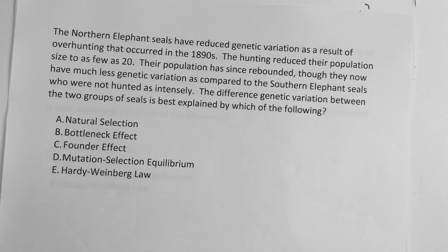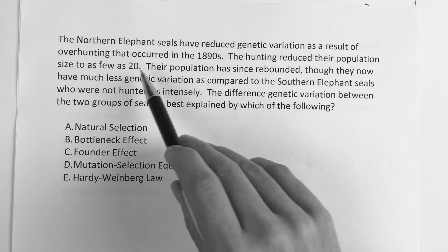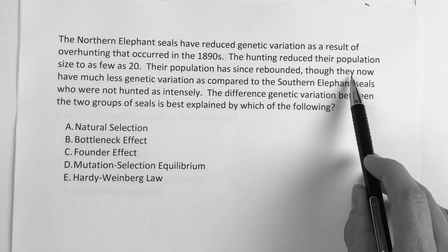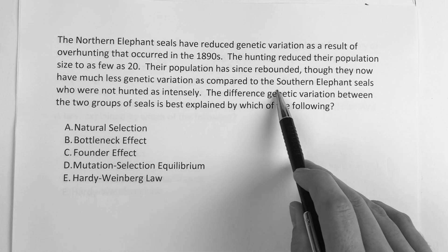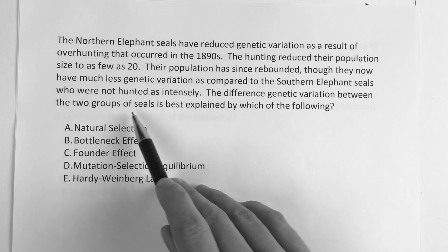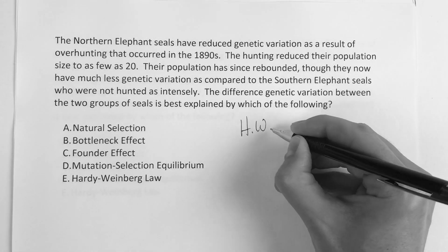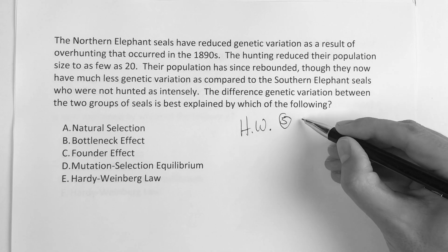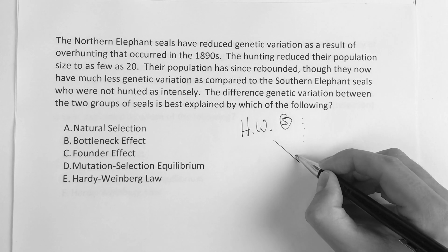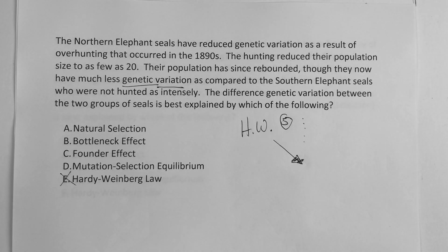The second question: northern elephant seals have reduced genetic variation as a result of over-hunting that occurred in the 1890s. The hunting reduced their population to as few as 20. Their population has since rebounded, but they now have much less genetic variation compared to the southern elephant seals, who were not hunted as intensely. The different genetic variation between the two groups is best explained by which of the following?